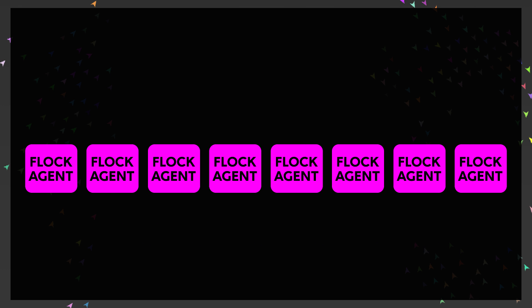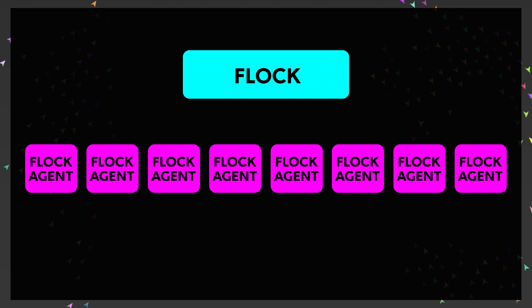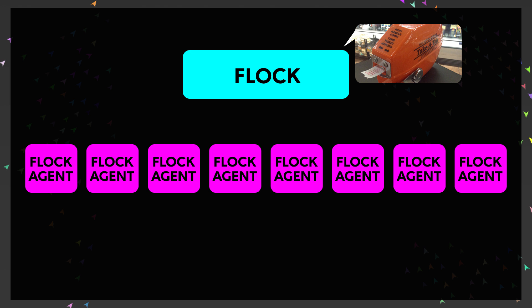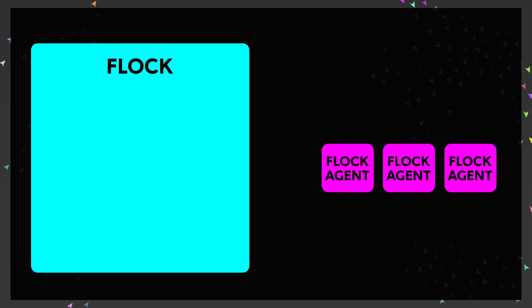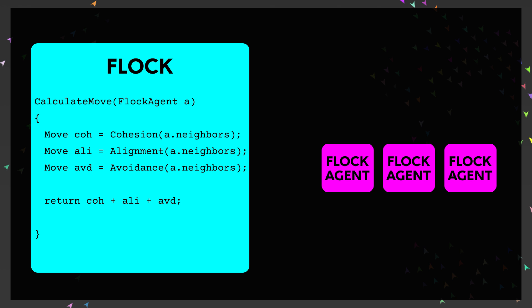A common implementation for a flocking algorithm is to use a core flock object. However, it shouldn't be assumed that this object is coordinating all of its agents. Rather, the flock object serves as an iterator for each agent to execute its own flocking behaviors. These behaviors are typically defined within the flock object but take the info of each agent in turn, so each agent behaves independently.